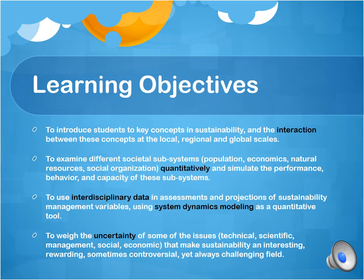It's one thing to know that you don't know something, but if you don't know what it is yet you know it's within some uncertainty range, then you have a much better idea of how to handle it. We're going to be looking at this with a series of examples and a series of topics. So the learning objectives are: looking at interactions quantitatively, interdisciplinary system dynamics modeling, and uncertainty.